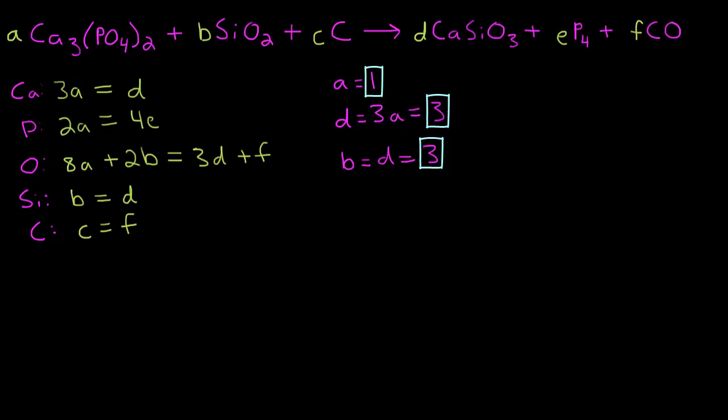What's next? We can use the phosphorus equation to solve for E. So we have 4E equals 2A. And if A is one, then 4E equals two. We can divide both sides by four. So we have E is equal to two over four, which is the same thing as one half.